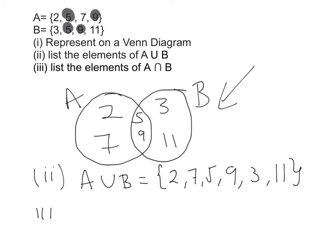Part 3 is asking us to find A intersection B. Again from class, you might remember that I told you the N shape in the word intersection is similar to the N shape here. That's how we're going to remember. We just need to look at what they actually have in common, which is the middle section of my Venn diagram: the number 5 and the number 9.